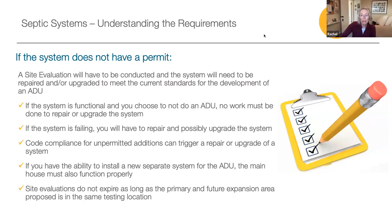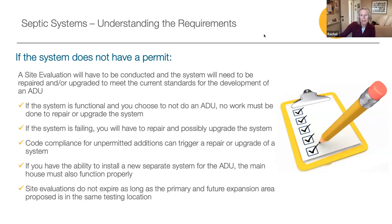However, if your system is actively failing, you will have to repair and possibly upgrade it. We also want to make you aware that code compliance for unpermitted development done after the system was installed can trigger a repair or upgrade if the system is not sized correctly. If you are one of the people who can install a new separate system for the ADU because your lot is big enough, please be aware that the main house system must also be evaluated and be functioning properly. Finally, if you decide to go forward with the site evaluation, please know that it doesn't expire as long as the primary and future expansion fields remain in the same place, so you have time to plan before beginning your project.